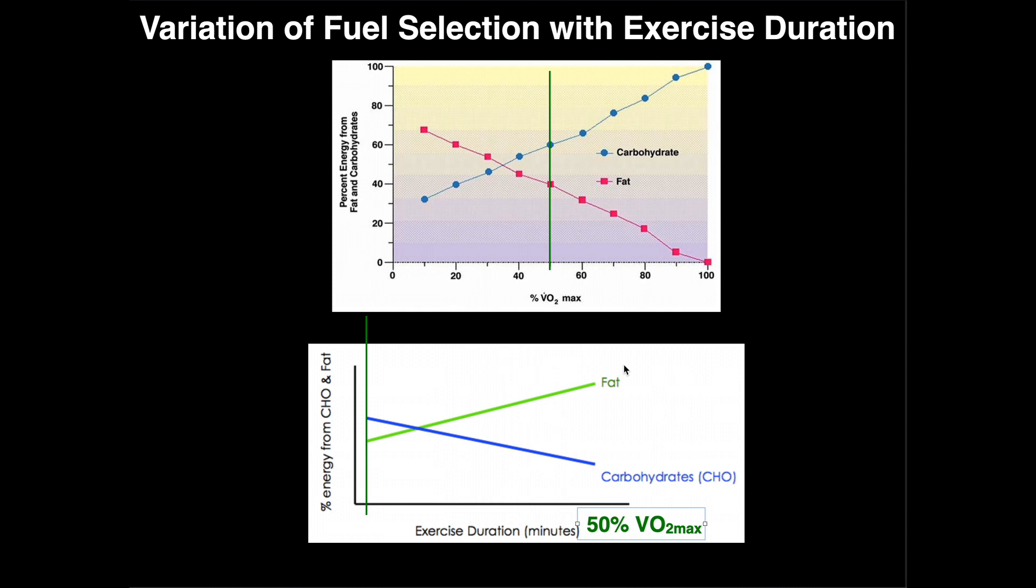Let's suppose you had an individual who's running at a constant speed, constant intensity, and they're running at 50% VO2 max. Well in the first few minutes of exercise, which is close to this onset, you can see they're going to be relying more on carbs than fat.